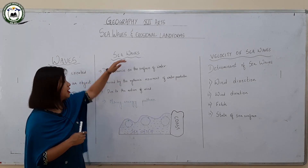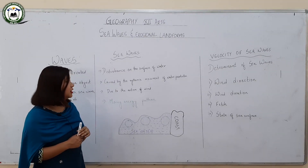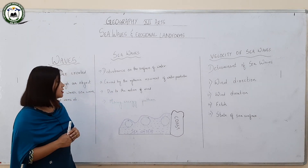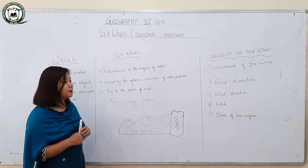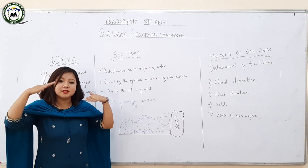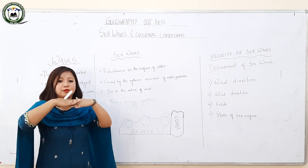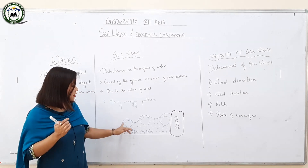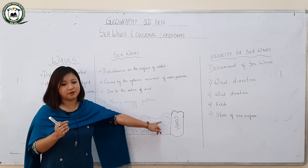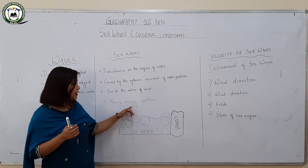Now coming to sea waves, sea waves can be defined as the disturbance on the surface of water caused by the rhythmic movement of water particles due to the action of wind. When wind hits the moving water particles, there is the creation of a circular pattern or a whirl, which is regarded as sea waves. In a nutshell, sea waves can be defined as a moving energy pattern.